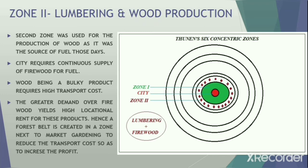Zone two is the zone of lumbering and wood production. Wood was the source of fuel in those days. The demand for wood is bulky in nature and hence requires higher transportation cost. This demands that firewood yield a higher locational rent, and hence a forest belt concentrates in the second zone to reduce transportation cost and thereby increase profit.